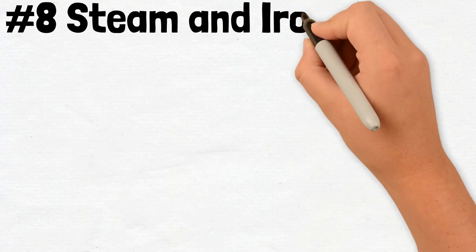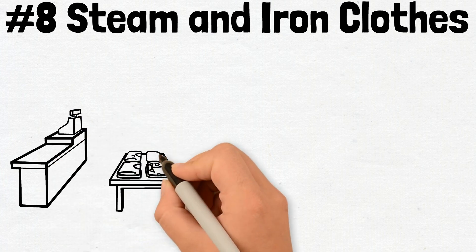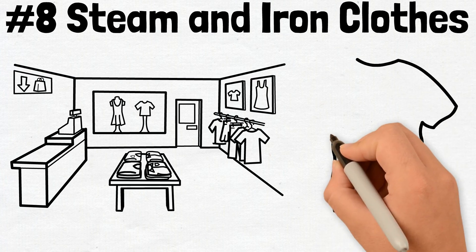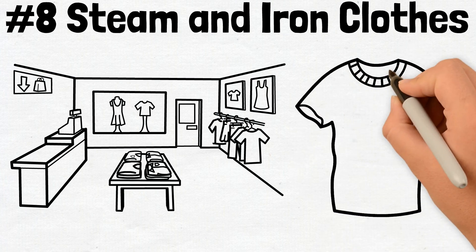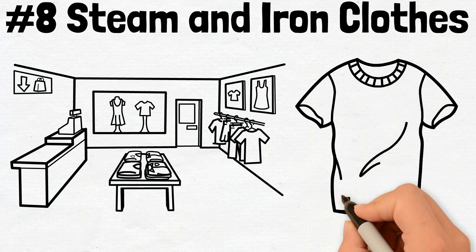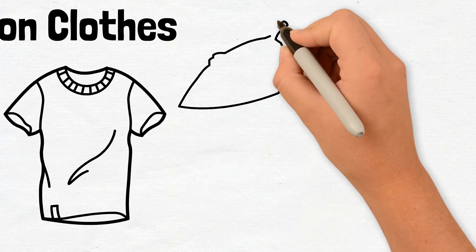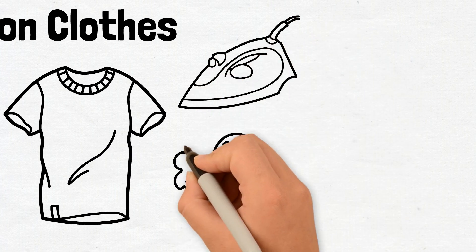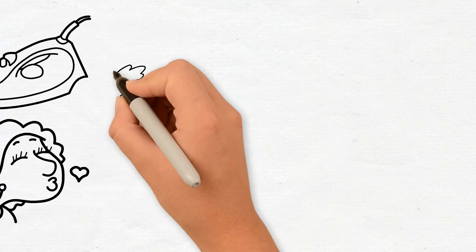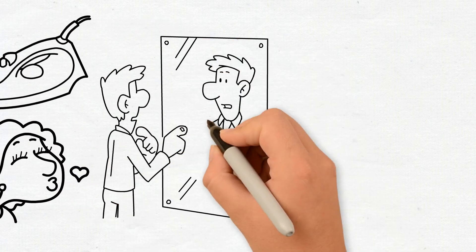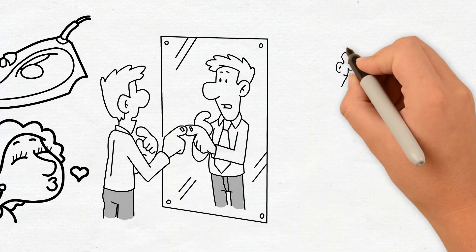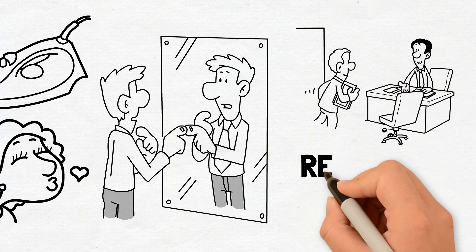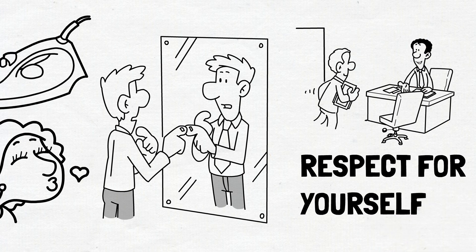8. Steam and Iron Clothes. Properly press your clothes to achieve a crisp and polished appearance. Wrinkled or crisp clothing can make even the most expensive garments look sloppy. Taking the time to steam or iron your clothes demonstrates your commitment to looking your best. Women appreciate the man who pays attention to these details. When you present yourself in well-pressed clothing, it conveys that you're a man who cares about the impression you make. It's a sign of respect for yourself and those you interact with.